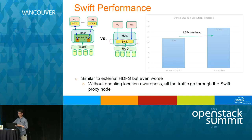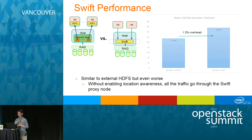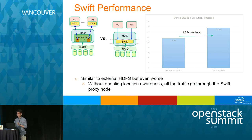We then compared Swift performance. The overhead is higher than the ephemeral disk case. The reason is that the location-awareness feature for Swift is not enabled — we tried to enable it but ran into errors. If this feature can be turned on, we should see similar or even better performance than internal HDFS. The conclusion is that if we can move data outside the virtual machine, we have a chance to achieve better performance while also having centralized storage that may bring more business opportunities.